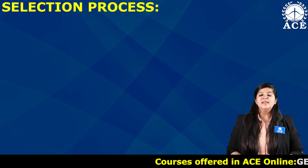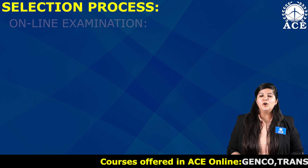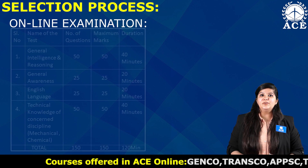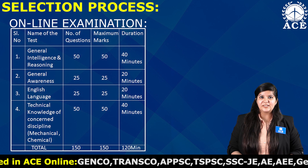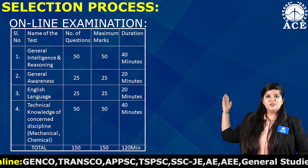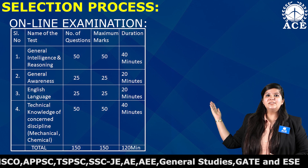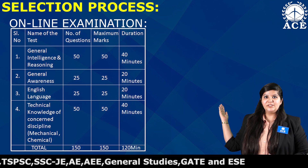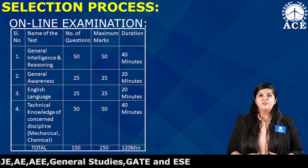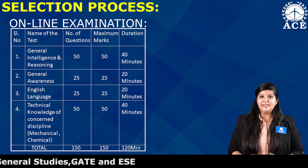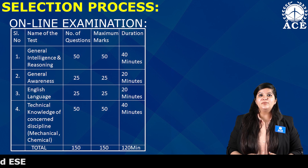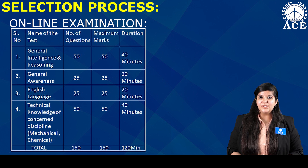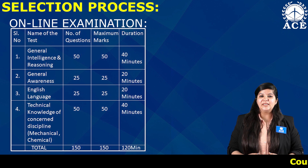Now let us look at the selection process. Candidate selection is based on an online written examination. The written exam will have MCQ-type questions from four sections: General Intelligence and Reasoning, General Awareness, English Language, and Technical Knowledge. There will be 50 questions from General Intelligence and Reasoning, 25 from General Awareness, and 25 from English Language.